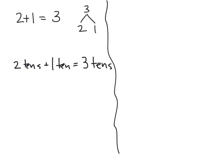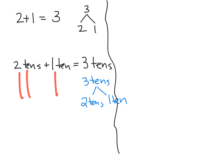So what would our number bond look like? Our number bond would show three 10s at the top, with two 10s and one 10 as the parts. We could use the quick 10s method: two 10s plus one 10 gives us three 10s total. All of this leads our students towards 20 plus 10 is equal to 30.